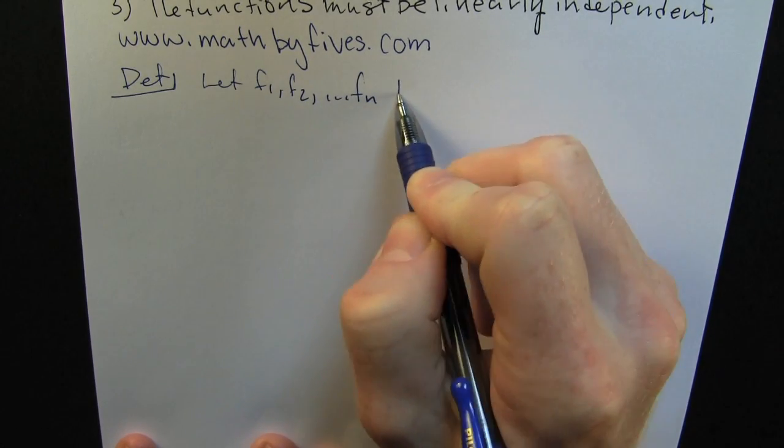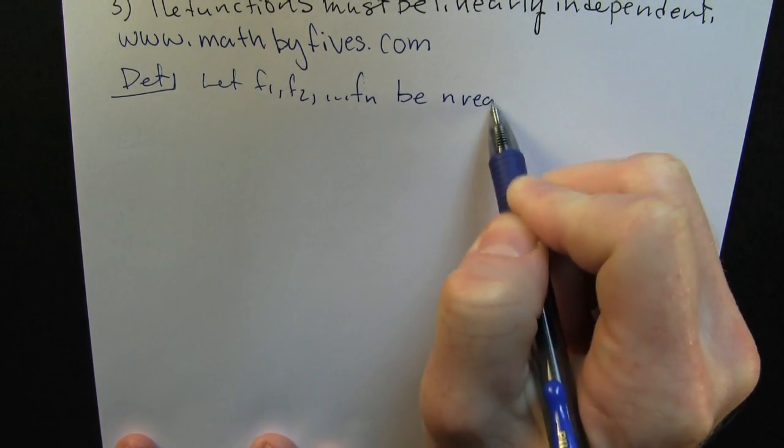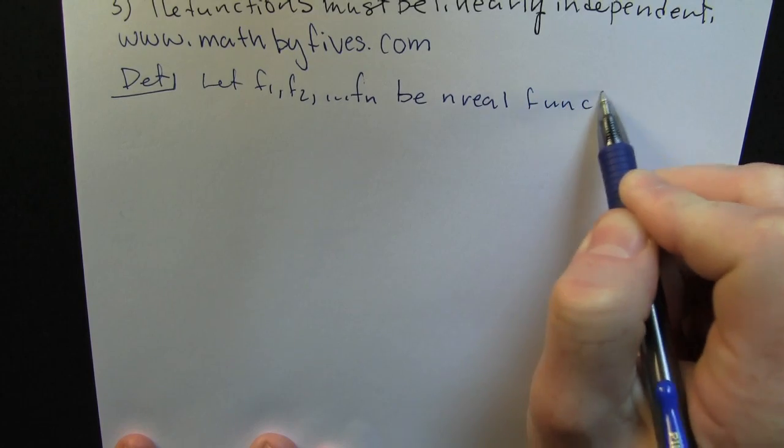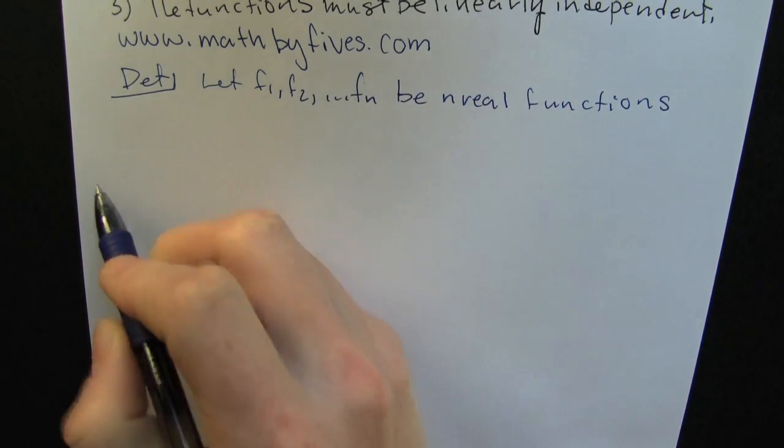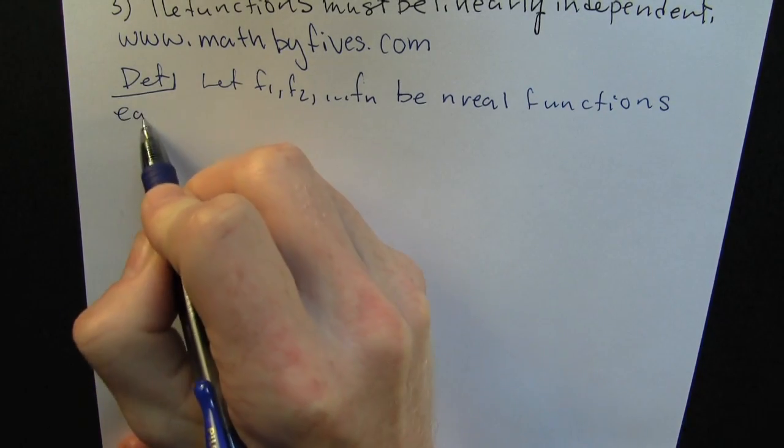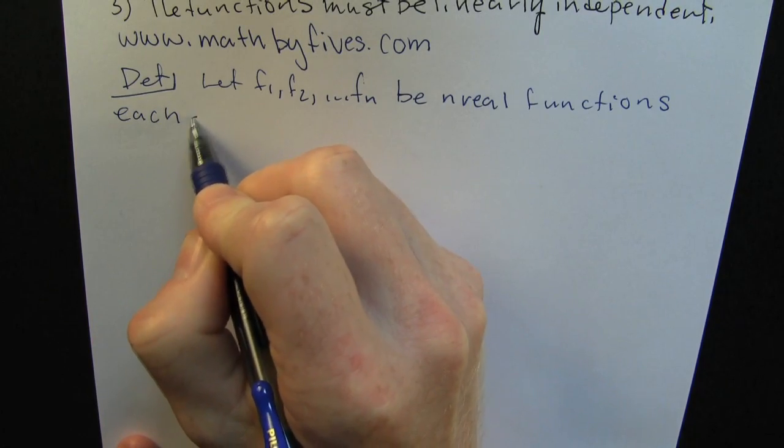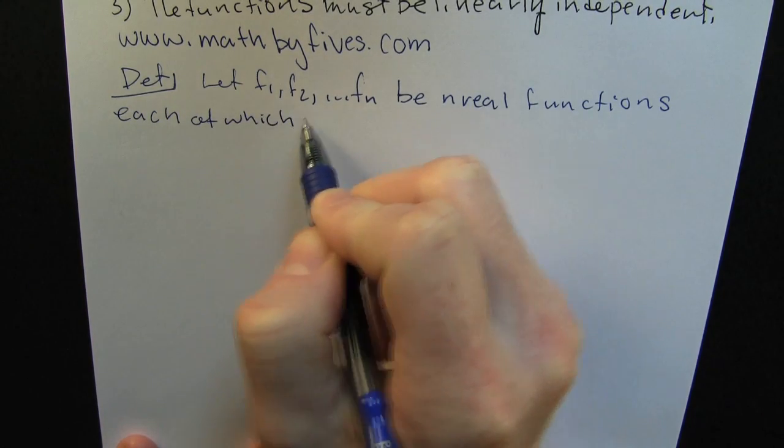Here we're gonna let a couple of functions, well, n of them. We're gonna let them be real valued functions, each of which has n minus 1 derivatives.